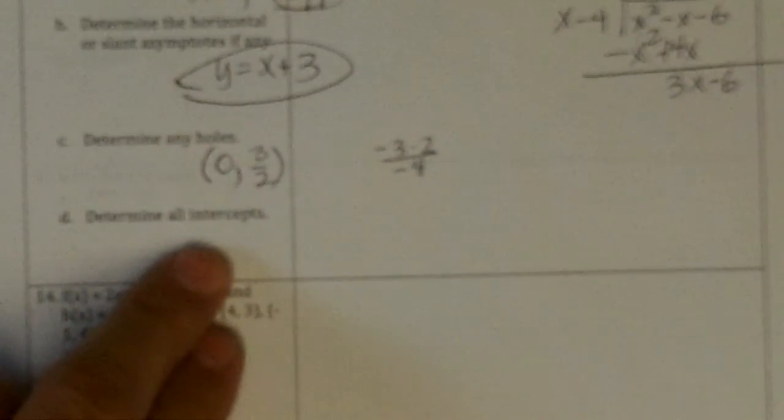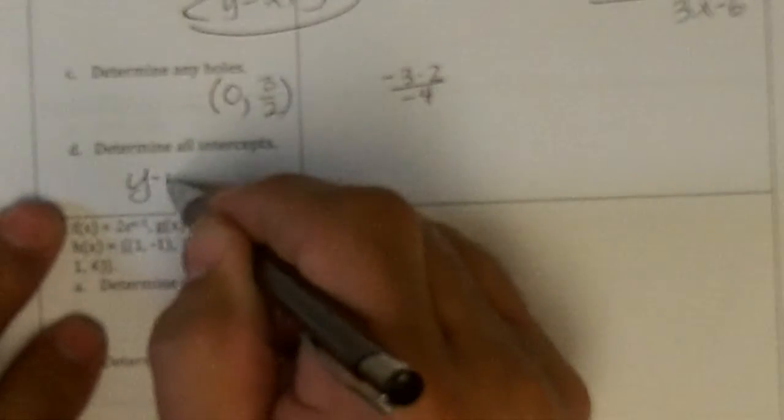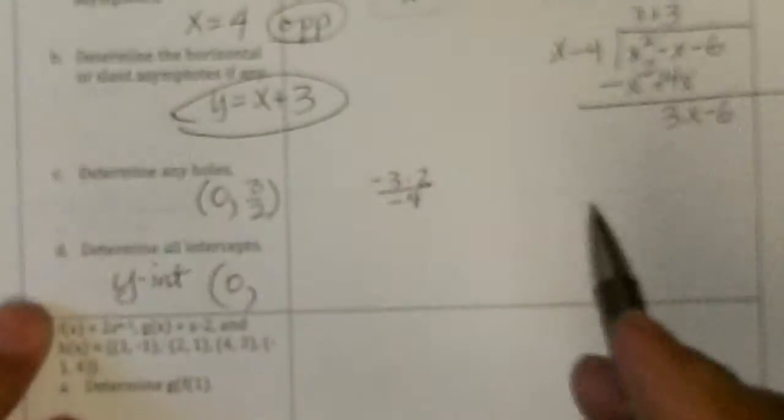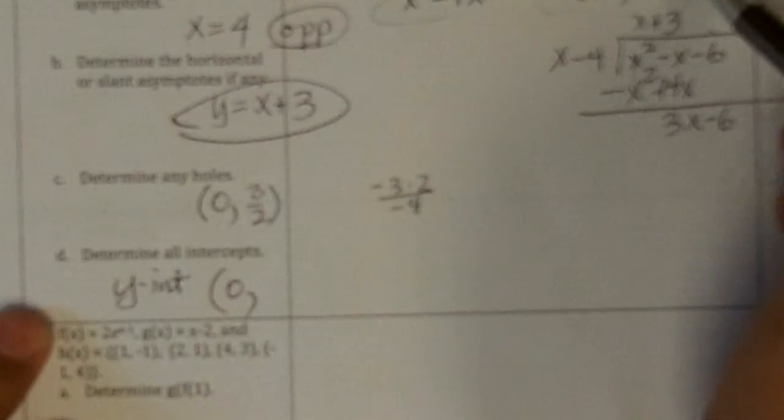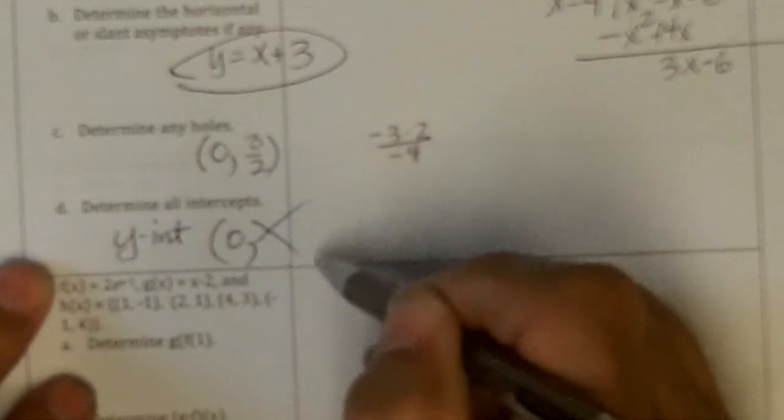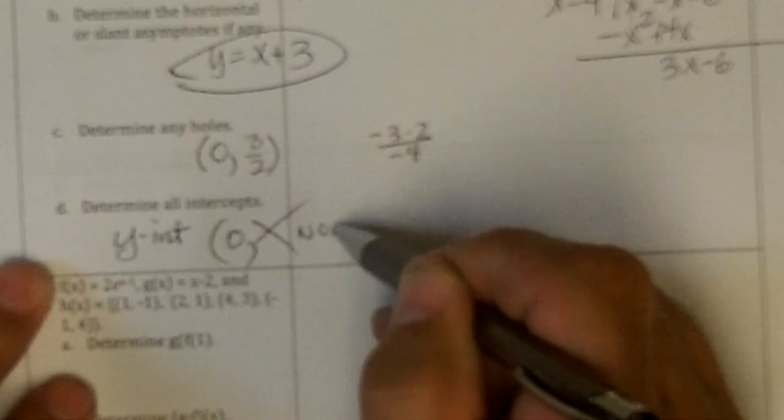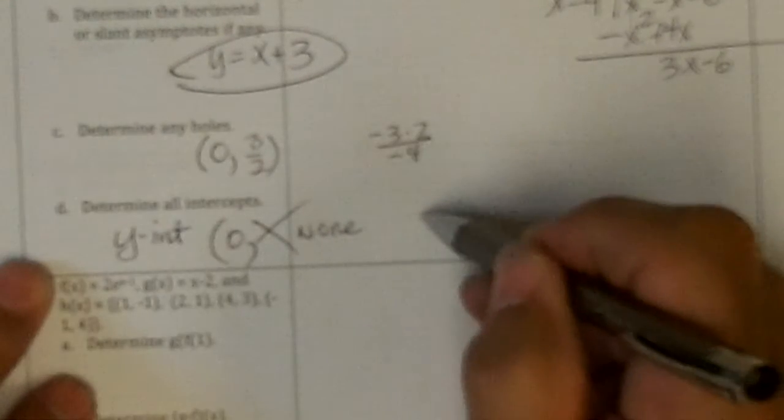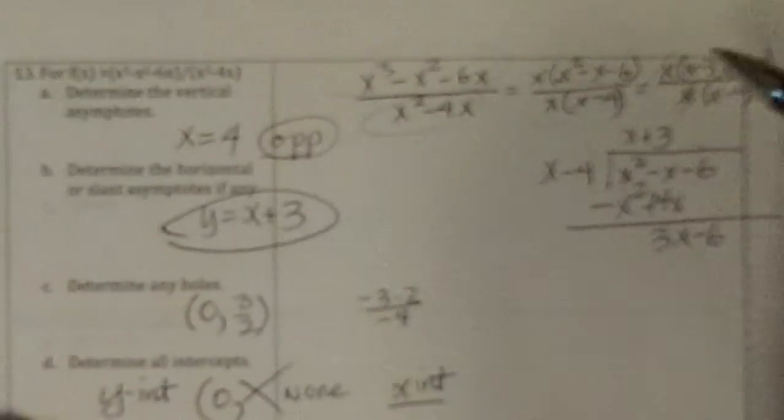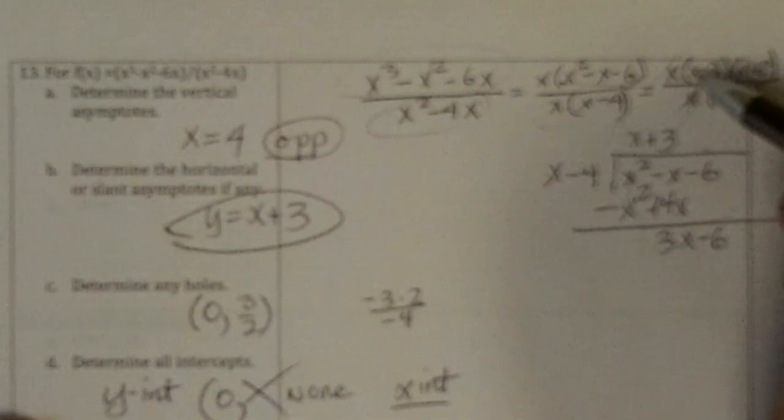And it says determine all intercepts. Well, the y-intercept is put 0 in for x, and that causes 0, so it can't have one—none. And then x-intercepts: it's what makes the numerator 0, but we can't use the x, so it's 3 and negative 2.